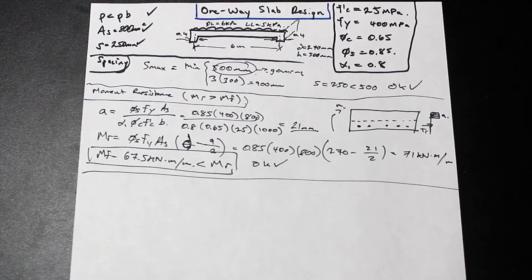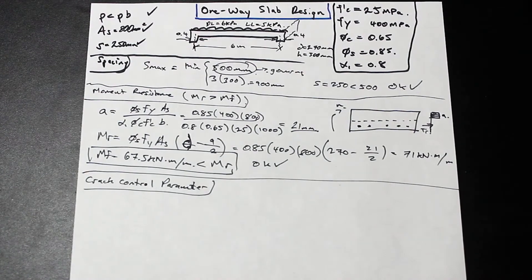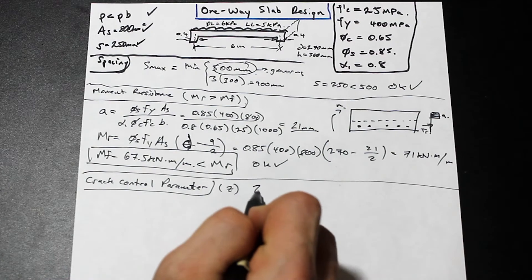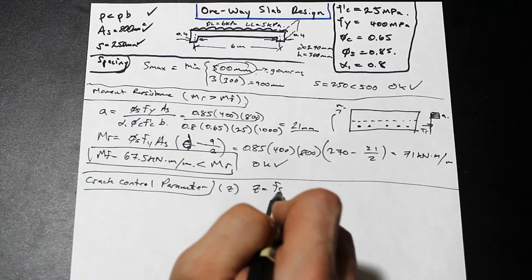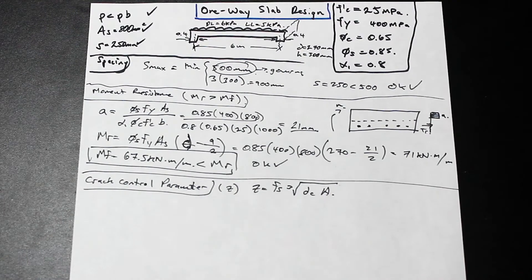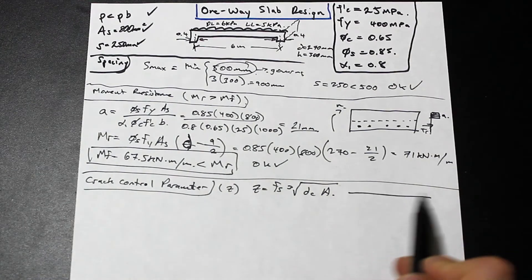Now we're going to need to check something called the crack control parameter. The crack control parameter, we're going to call that zed, is governed by the cover. What it is, is a clause in the code that makes sure that we don't provide too much cover. Or if we do, we need to decrease the spacing of the bars in order for tension cracks not to appear on the outside of the beam. This is a clause that must be satisfied according to the Canadian code. The formula for zed given by the Canadian code is simply fs times the cube root of dc times a.